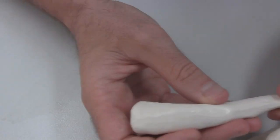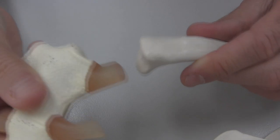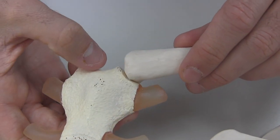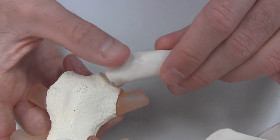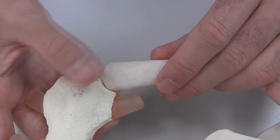At the other end of the clavicle, we've got this unique half a saddle joint, which makes the full saddle joint when it attaches to the top of the sternum at the manubrium there. This is called the sternoclavicular joint, because it's going from the sternum to the clavicle, and that's a shallow saddle joint.